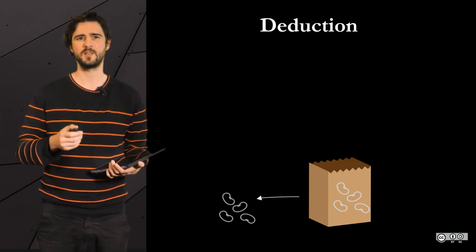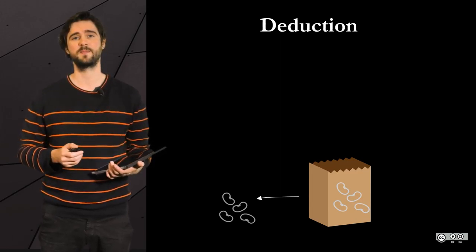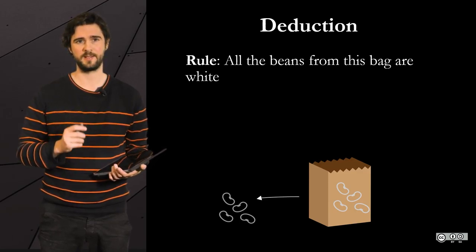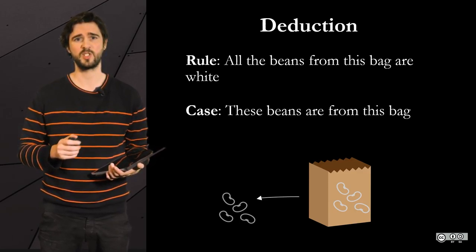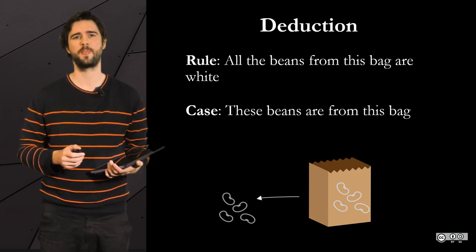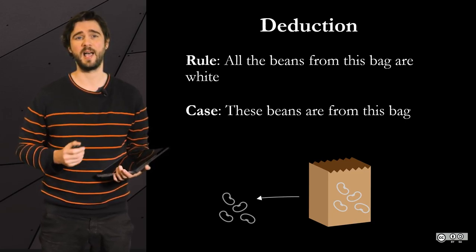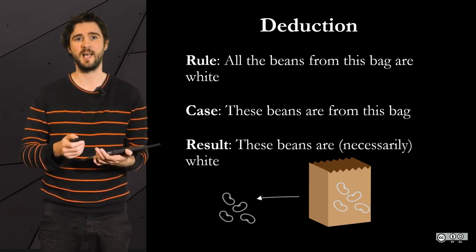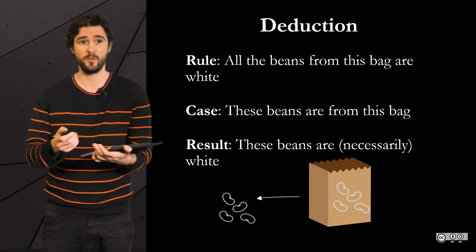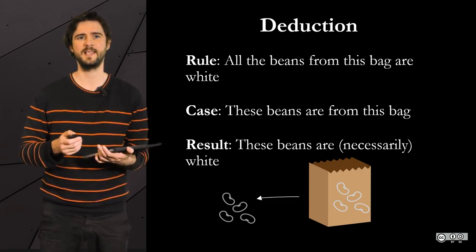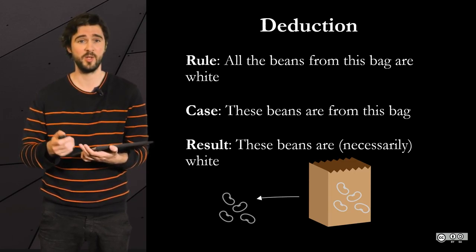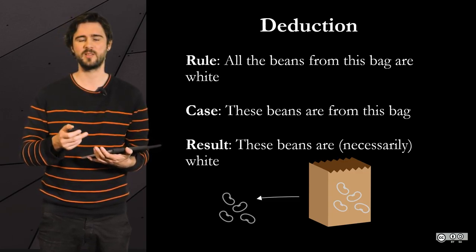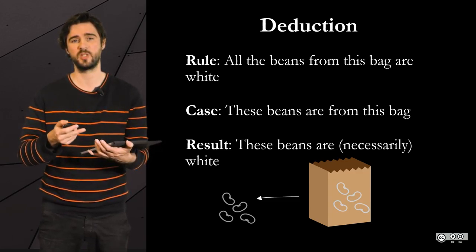We start with the rule as the first premise — for example, all the beans in this bag are white. Then the case, which corresponds to the second premise: the beans are from this bag. And then the conclusion: the beans I am taking from this bag are necessarily white. If the rule stated in the premise is true, there is no other option. It is a necessity, and it's the only kind of inference where you have such necessity.